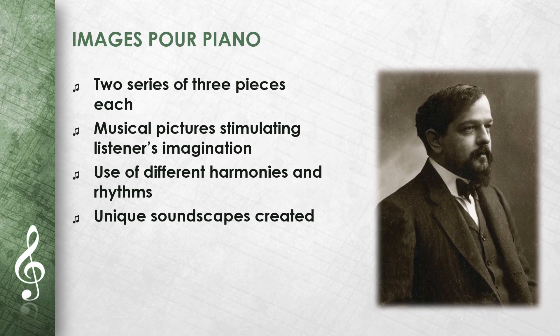Images pour piano consists of two series of three pieces each. The first series includes Reflets dans l'eau, Hommage à Rameau, and Mouvement. The second series contains Cloches à travers les feuilles, Et la lune descend sur le temple qui fut, and Poissons d'or. Each piece paints a musical picture that stimulates the listener's imagination.